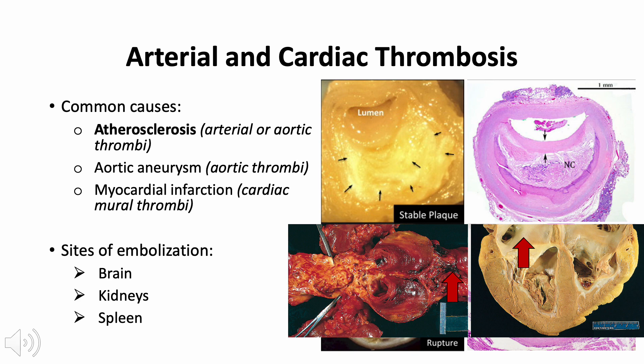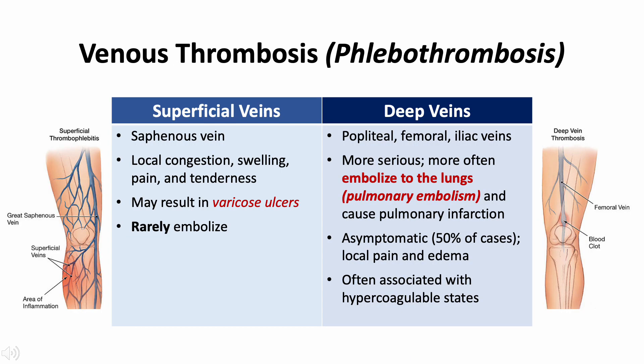Most venous thrombi occur in the superficial or deep veins of the leg. Superficial venous thrombi occur in the saphenous vein in the setting of varicosities. Deep vein thrombosis (DVT), typically found in popliteal, femoral, and iliac veins, is more concerning because these thrombi can embolize to the lungs and give rise to pulmonary infarction. DVT patients are asymptomatic in half of cases, making diagnosis and prevention of pulmonary embolism all the more difficult.